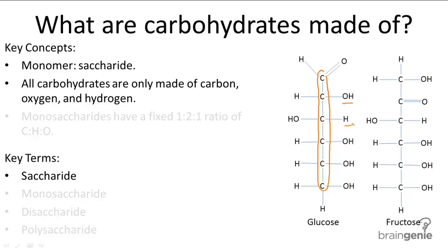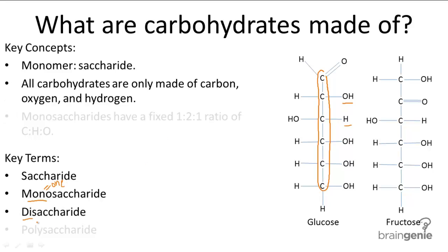A carbohydrate made of one saccharide is called a monosaccharide — mono equals one. So it's really easy to guess what a carbohydrate with two saccharides is called: a disaccharide, di for two. A carbohydrate with more than two saccharides would be called a polysaccharide, poly for many.